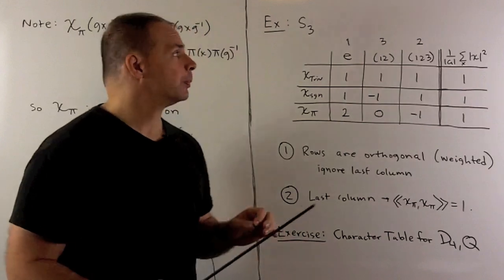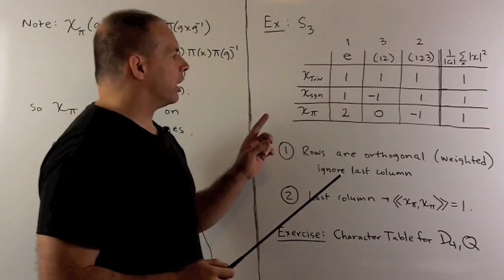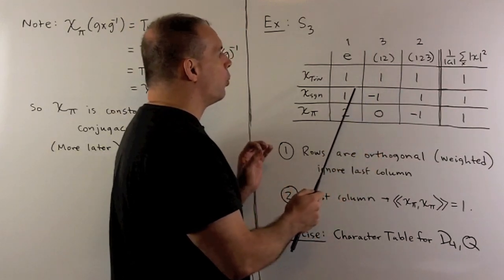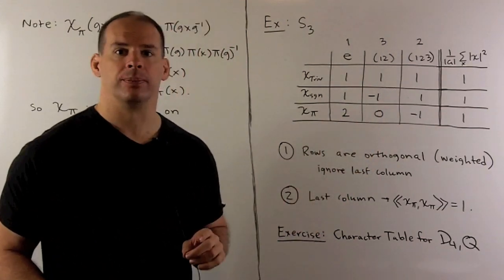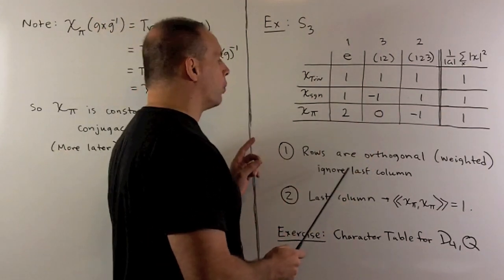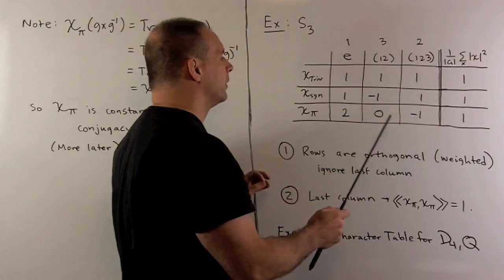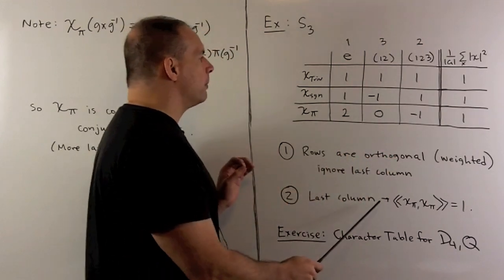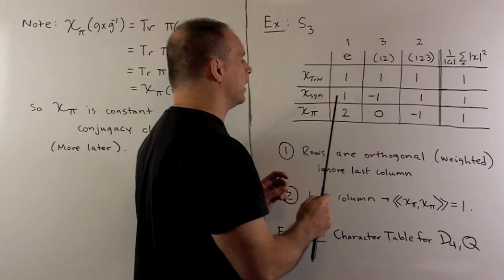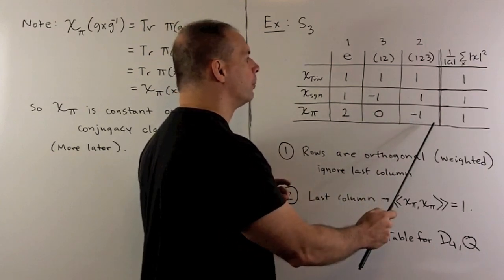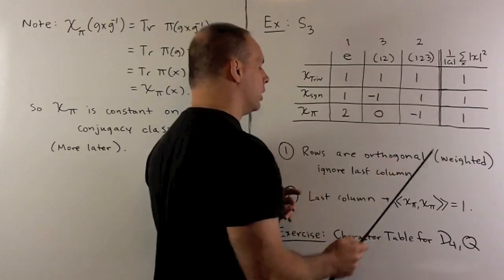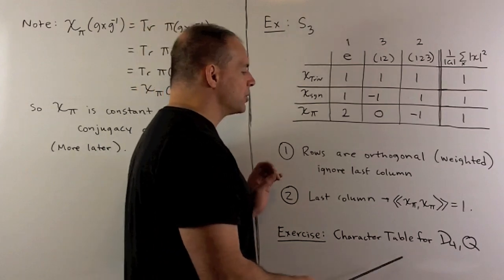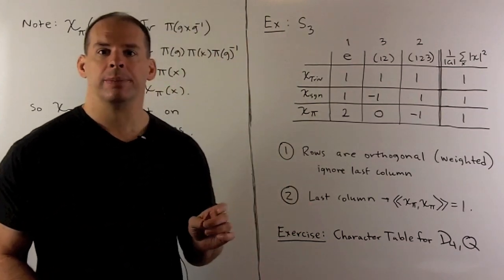As a final example, consider the character table for S3. For our columns, we list one element from each conjugacy class and weight the columns by the number of elements in each class. As before, ignoring the last column, the rows are orthogonal — as long as we weight our sum. For the last column, the sum of squares of the entries in a given row, weighted and divided by six (the number of elements in the group), equals one. Final exercise: find the character tables for D4 (the symmetry group of the square) and the quaternion group.